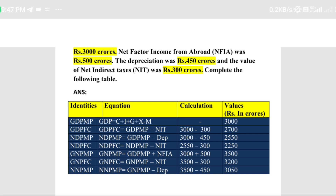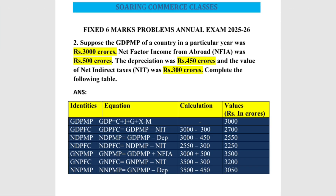The next identity is GNP MP. The formula for GNP MP is: GNP MP = GDP MP + Net Factor Income from Abroad. GDP MP is 3000 crores and net factor income from abroad is 500 crores. So 3000 + 500 gives us 3500 crores.